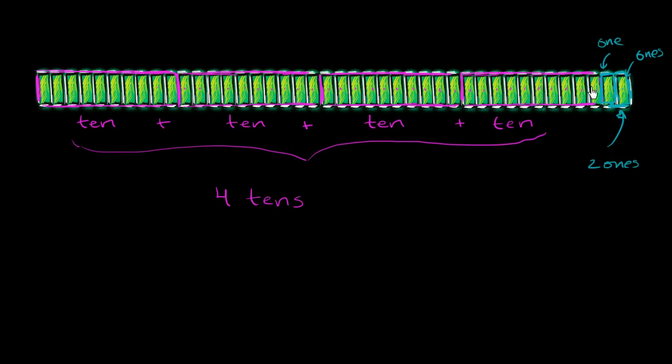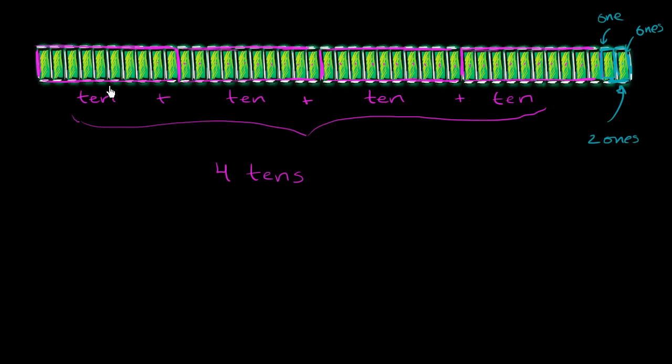Remember, each of these little green bars represents a 1. So this whole number is 4 tens—1 ten, 2 tens, 3 tens, 4 tens—plus the 2 ones. So it is 4 tens plus 2 ones.